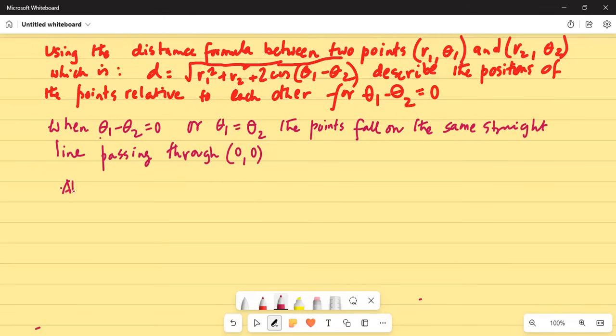Also, cosine of theta1 minus theta2 is equal to cosine zero, which is equal to one.